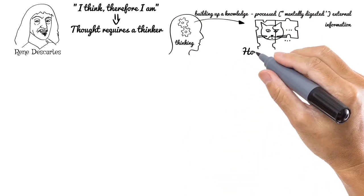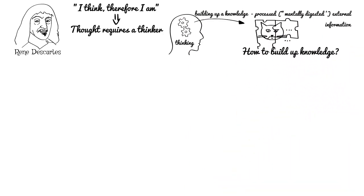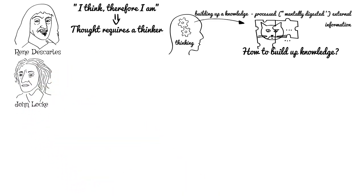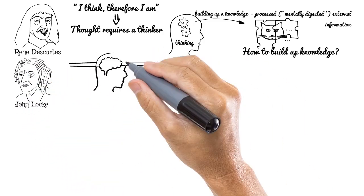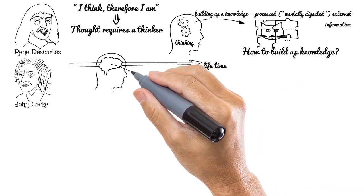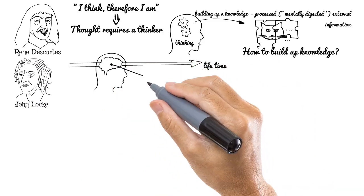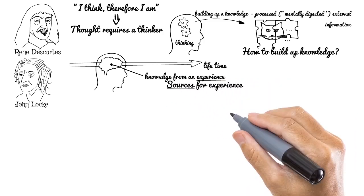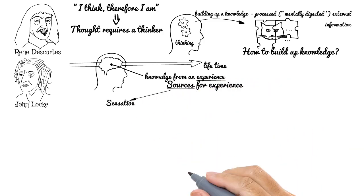But how can we build up our own knowledge? English philosopher and physician John Locke, also lived in the 17th century, mentioned that throughout our life human mind gains all the knowledge from experience. There are two main sources for experience as per Locke: sensation and reflection.